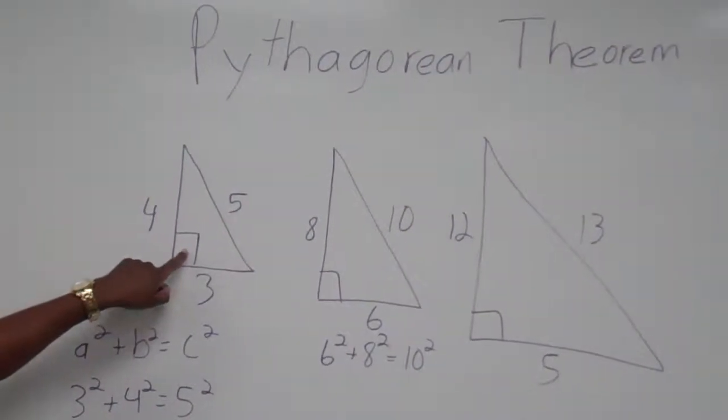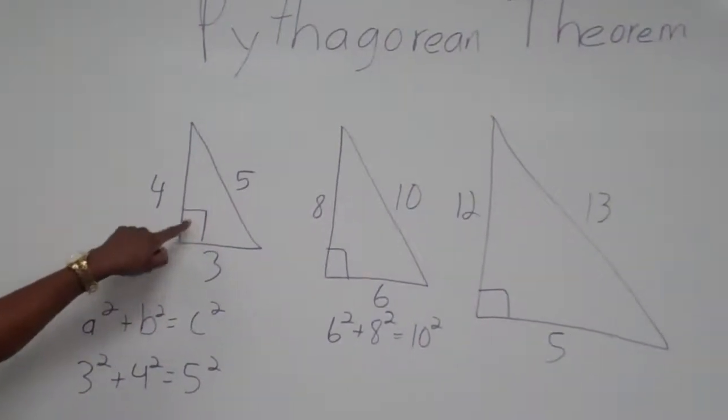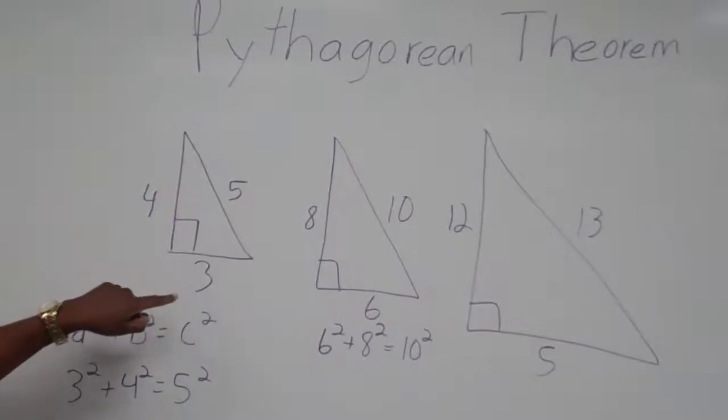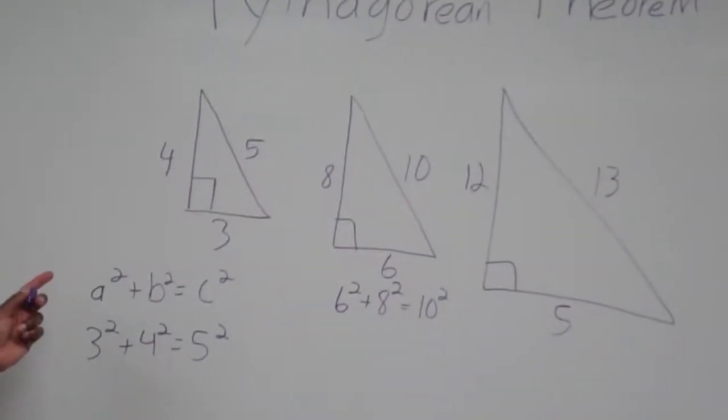Whenever you see a right triangle, which is a triangle that has this little sort of square rectangle kind of shape in it, it means it's a right triangle. And what you want to do is figure out what a missing side would be.